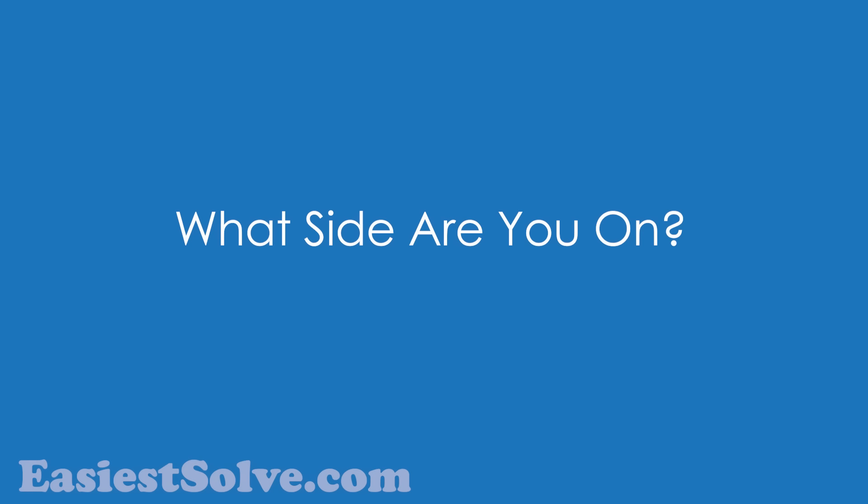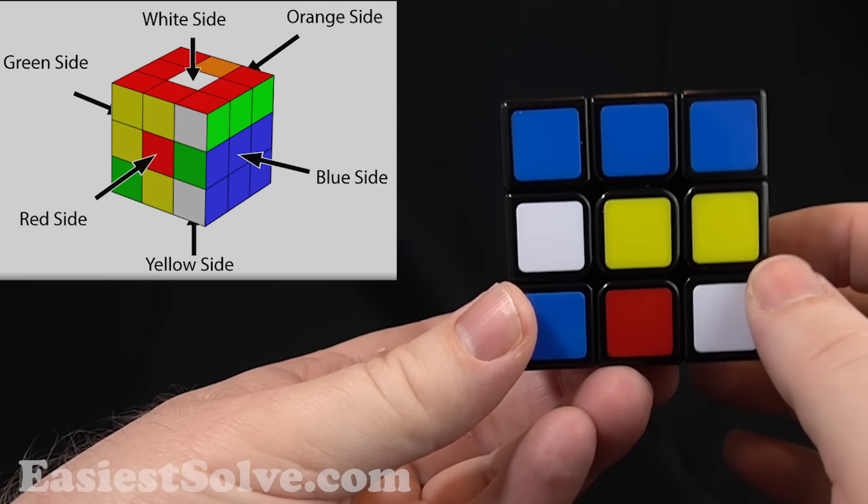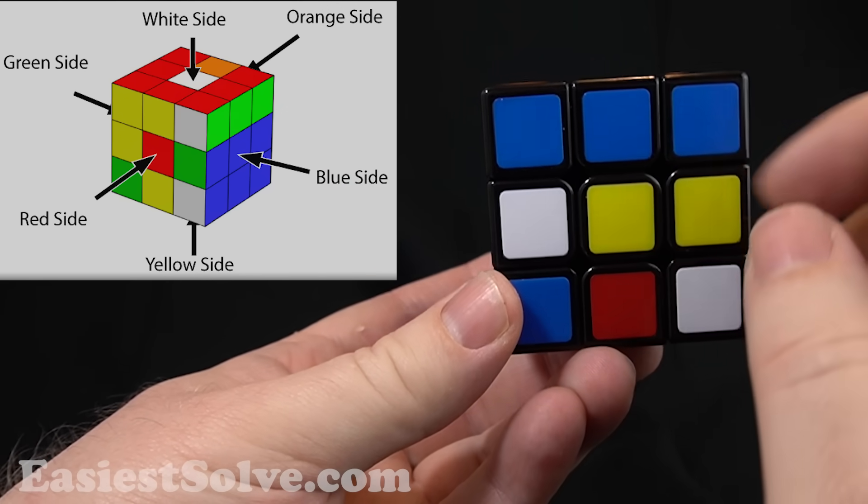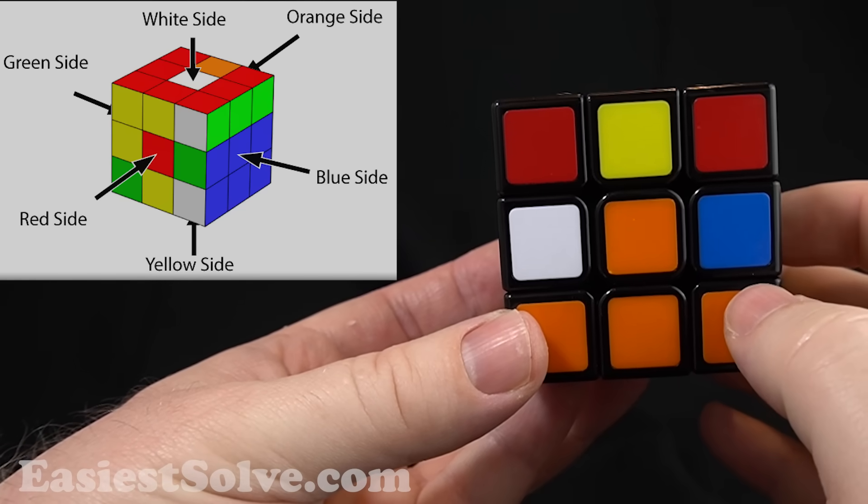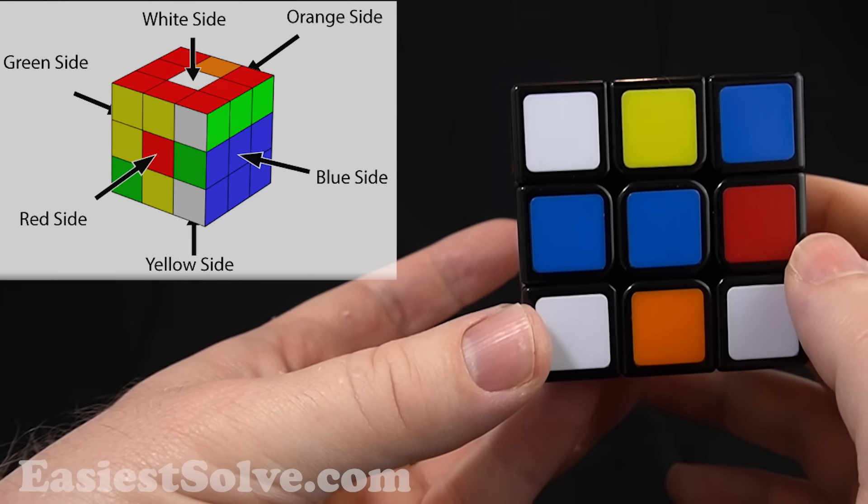In learning the Rubik's Cube, an important part is knowing what side you're on. For instance, this is the yellow side. Why? Because the center square is yellow. If I turn over here, this is actually the orange side, because the center is orange. Here is the blue side, and so on.